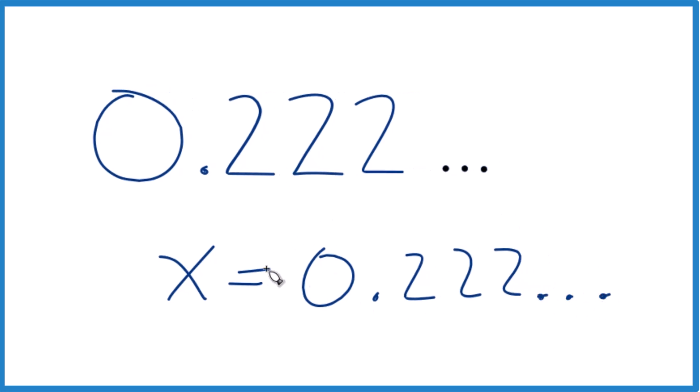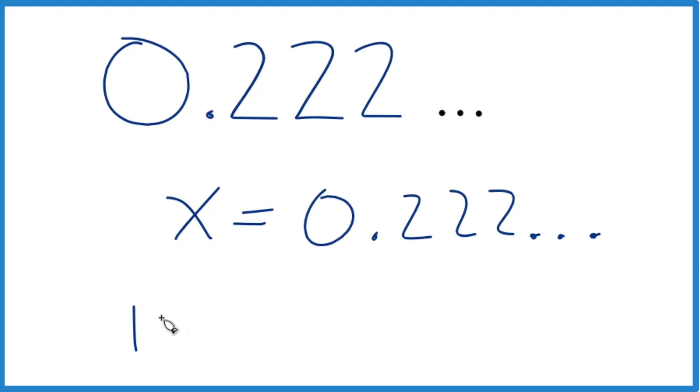And now what would be really nice if we could take this and get to have a whole number in here. So what I'm gonna do is I'm gonna multiply this by 10 because that'll give me 2.222 repeating, but I also have to multiply this by 10 too. This is algebra, right? So 10 times X is 10X.